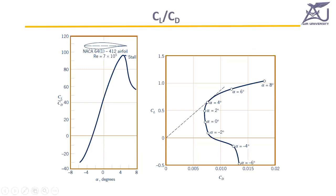We want to maximize lift and minimize drag, so we examine the lift-to-drag ratio — the ratio of CL to CD — to see the performance of an airfoil. For example, the 64-412 airfoil has a NACA nomenclature that tells us about its geometry: the chord-relative thickness, camber, and symmetry. At different Reynolds numbers, the CL-CD curve can change.